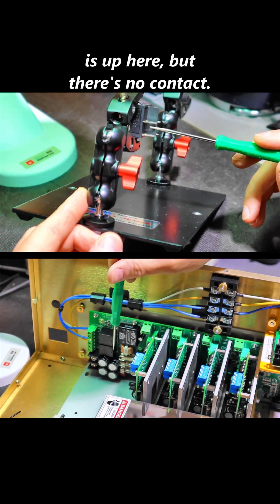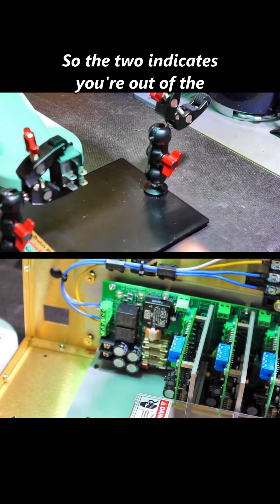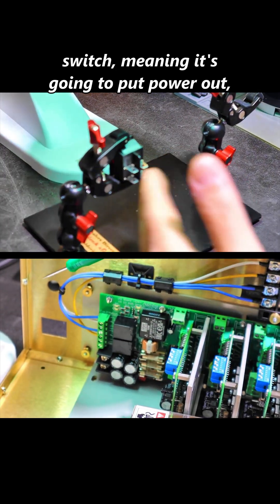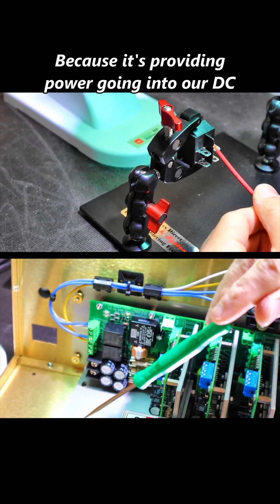Three is up here but there's no contact. So pin 2 indicates your output of the switch, meaning it's going to put power out, which would be a red lead. Why a red lead? Because it's providing power.